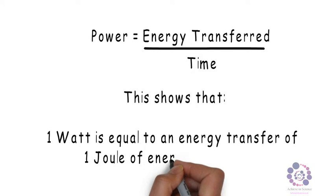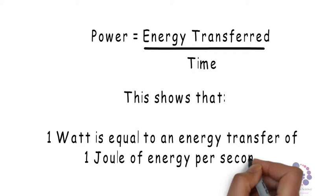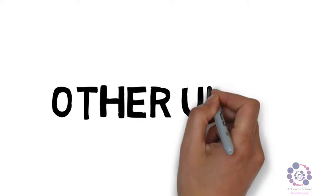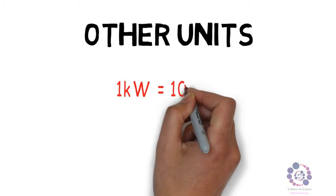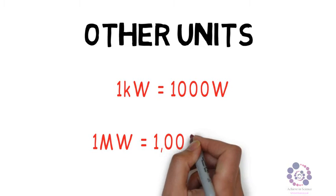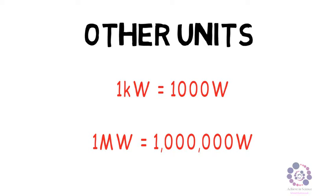Of course we don't always just keep to single joules because the numbers can get very big. Therefore we need to include other units and be aware of them. For instance we could have one kilowatt which would be one thousand watts, or one megawatt which would be one million watts.